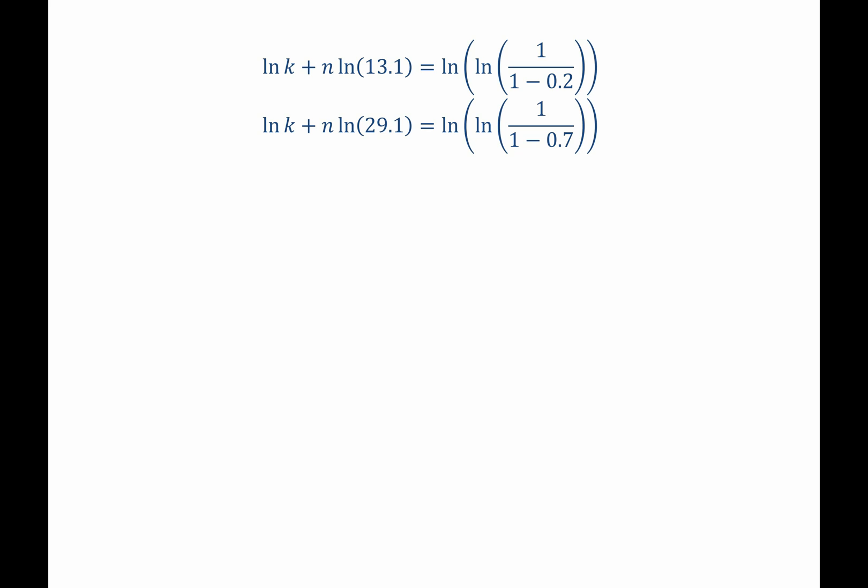So plugging in values, we don't know what k is, we don't know what n is, but we do know what the time is and we know how much converted after that time. We know what y is. We know that for two different points, so now we have two equations and two unknowns.